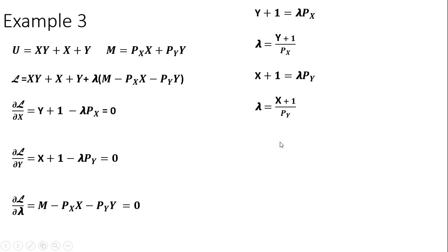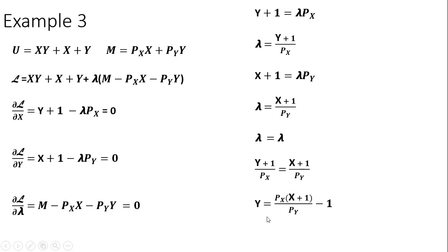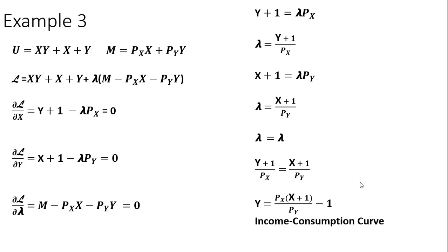Setting lambda equal to lambda eliminates the lambda terms. We then solve for y by multiplying through by the price of good x and subtracting one from both sides, giving us the income consumption curve for this utility function. That's it — I hope you found this video helpful.